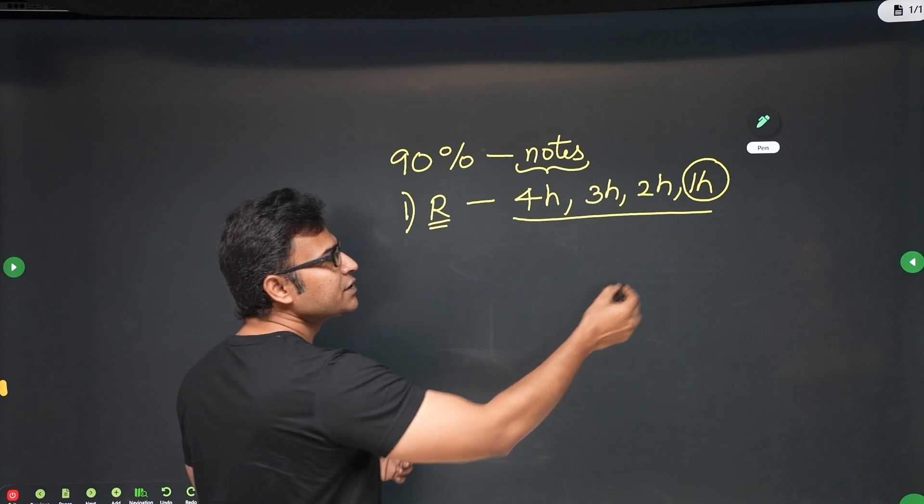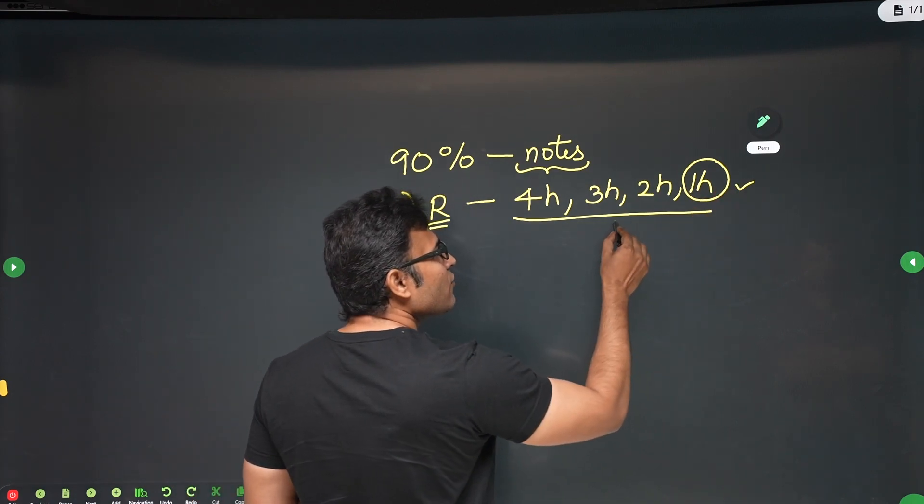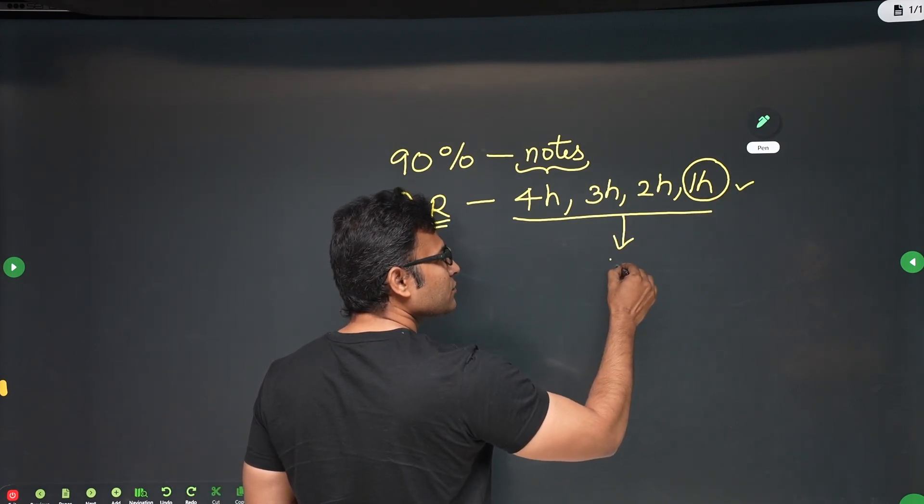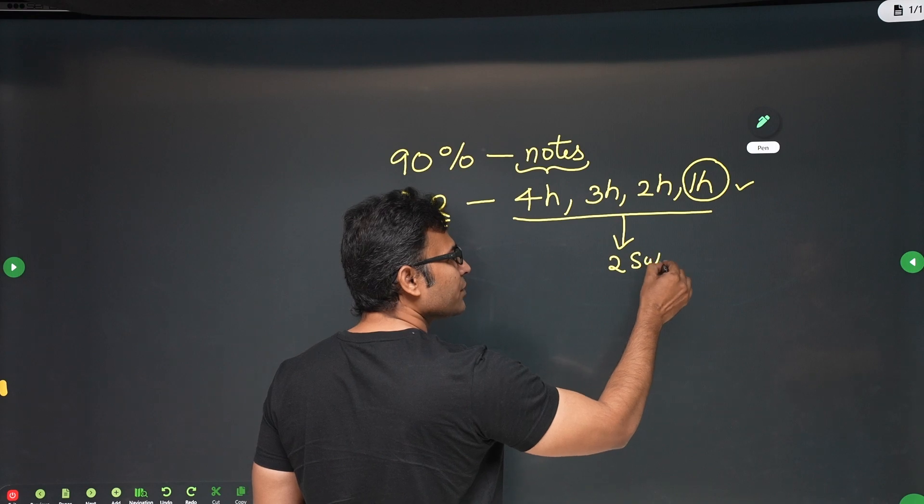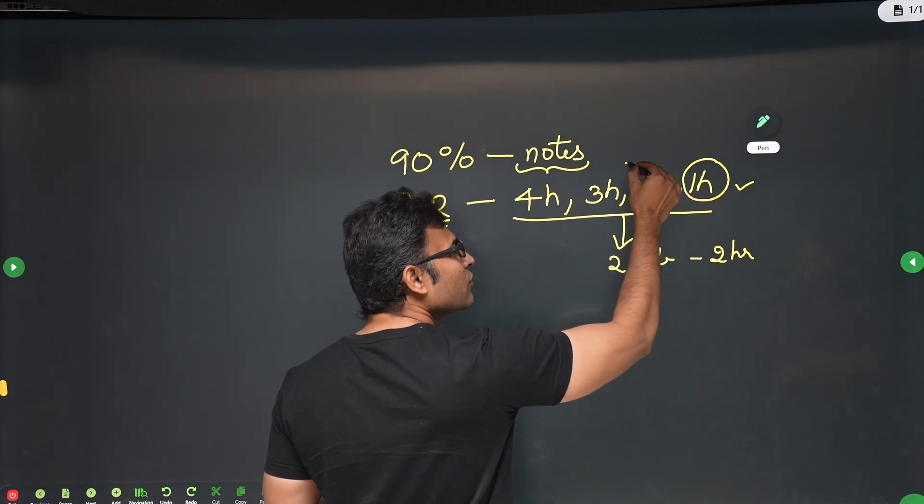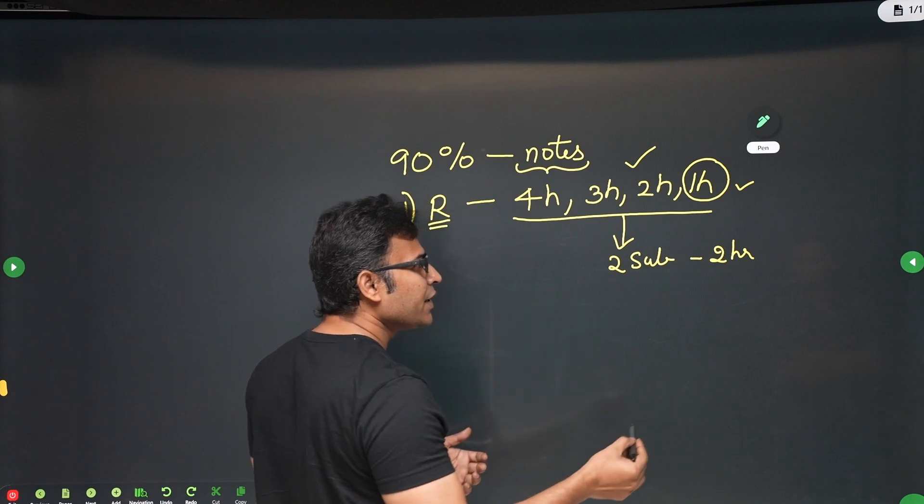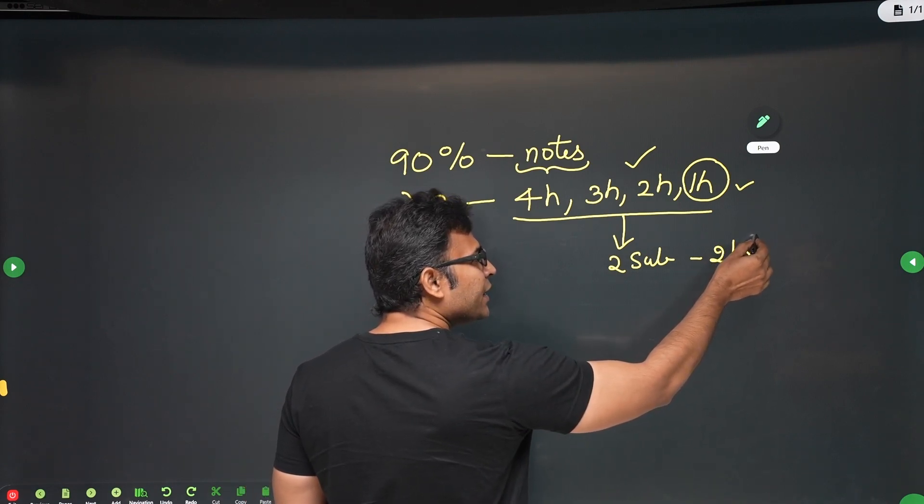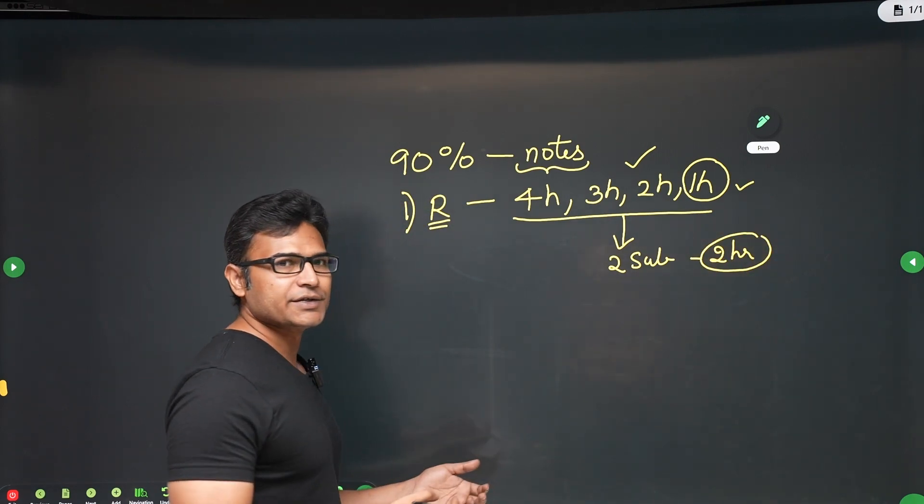And after you reach this 1 hour time, every day you revise 2 subjects. Every day you revise 2 subjects for 2 hours. Therefore, your revision time initially will be very high, but after that, every day you can dedicate only 2 hours and revise 2 subjects.